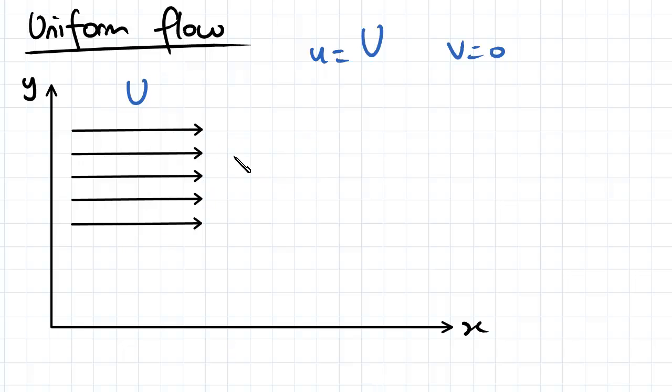Now what we want to do is relate that in terms of our stream function and our velocity potential function. We know from the last couple of videos that u is actually equal to the partial derivative of our velocity potential function in terms of x, and that's equal to that value of U.